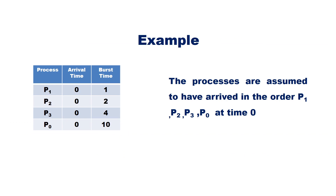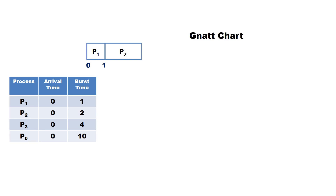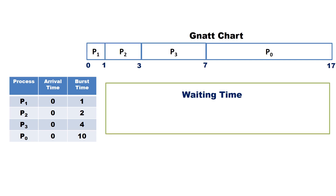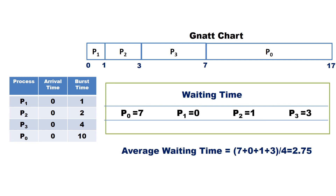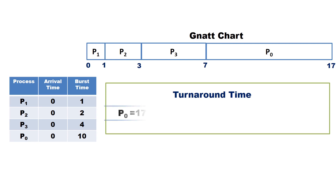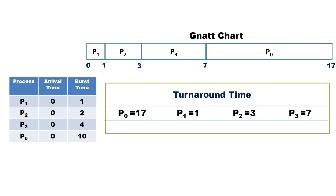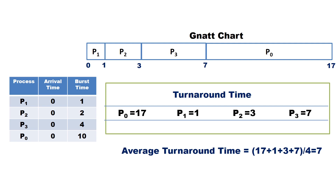Now let us assume the processes arrive in a different order: P1, P2, P3, and P0. The Gantt chart: P1 starts at 0 and ends at 1, P2 starts at 1 and ends at 3, P3 starts at 3 and ends at 7, P0 starts at 7 and ends at 17. Waiting time: P0 = 7, P1 = 0, P2 = 1, P3 = 3. Average waiting time = 2.75. Turnaround times: P0 = 17, P1 = 1, P2 = 3, P3 = 7. Average turnaround time = 7.